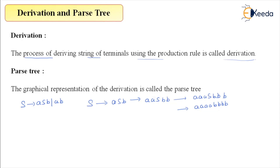Among these steps, if you count: step number one, step number two, step number three, and ultimately step number four — which consists of a string of terminals. This is called derivation; we can say this is a four-step derivation.